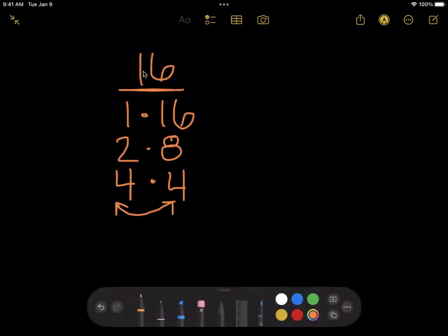So the factors of 16 would be 1, 2, 4, 8, and 16. Even though it's 4 times 4, we don't need to list this twice.